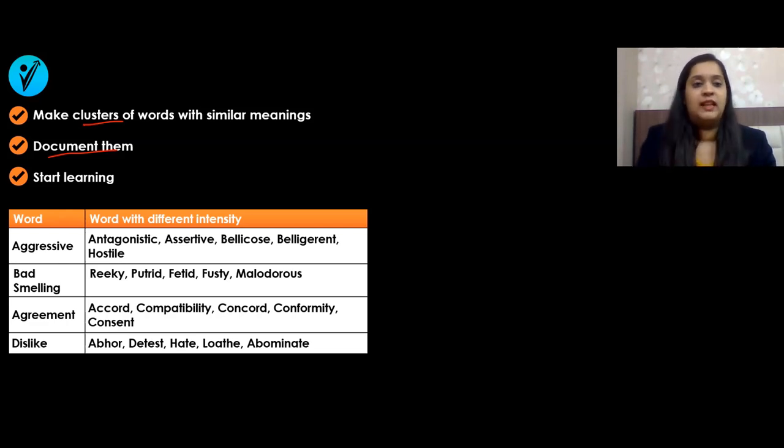You can further divide it into feelings, meaning of words, different animals, phobias, manias—that's how you can start learning. Look at this example word: aggressive. What are the different words we can use for aggressive? Antagonistic, assertive, bellicose, belligerent, hostile.